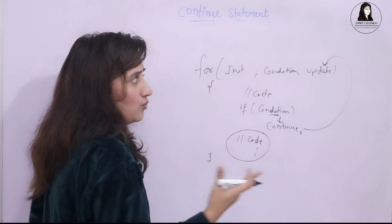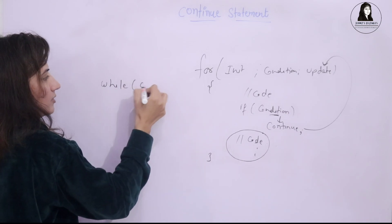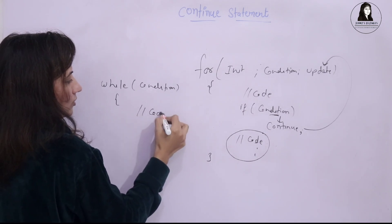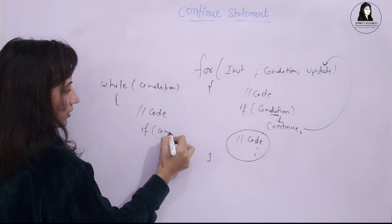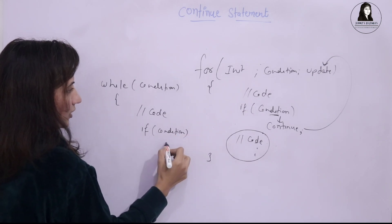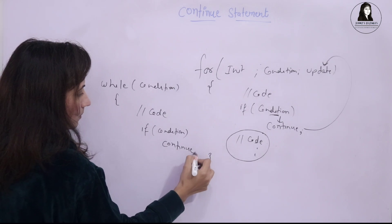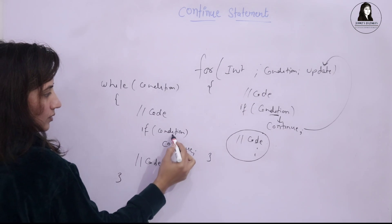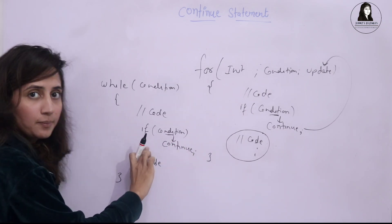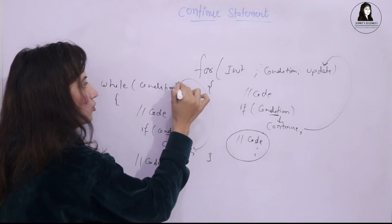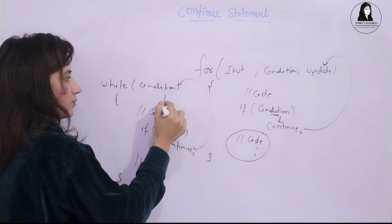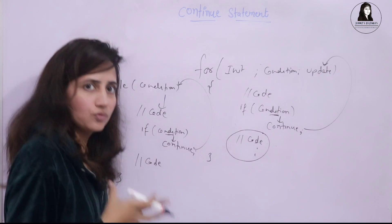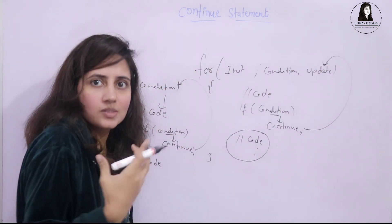Same in a while loop. We put the condition here, then have some code and some statements. Then if a particular inner condition is true, then continue. Those next statements would not be executed — they would be skipped. Control will directly go to the beginning of the loop for the next iteration. We will not go out of the loop; we will go for the next iteration. This is the continue statement.